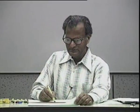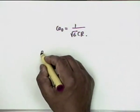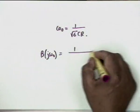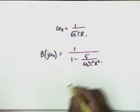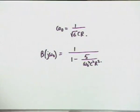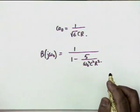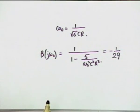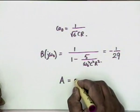Going back to the transfer function at ω₀ = 1/(√6 CR): the imaginary term is 0, and the real part gives β = 1 − 5/(ω₀²C²R²). Since ω₀²C²R² = 1/6, this becomes β = 1 − 5·6 = 1 − 30 = −1/29. This is what gives rise to the fact that the gain required for the basic amplifier A must be 29.